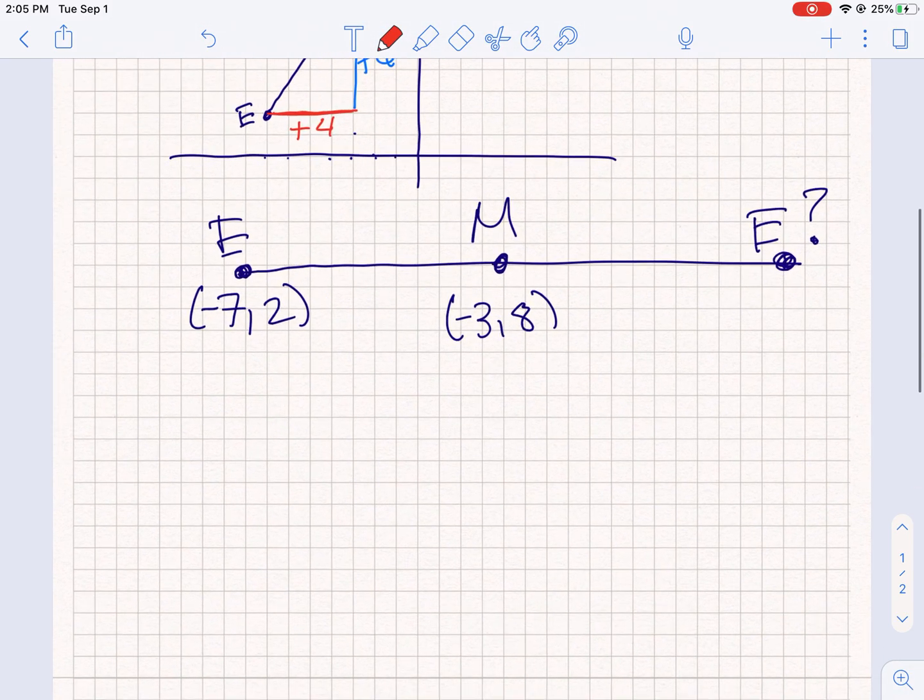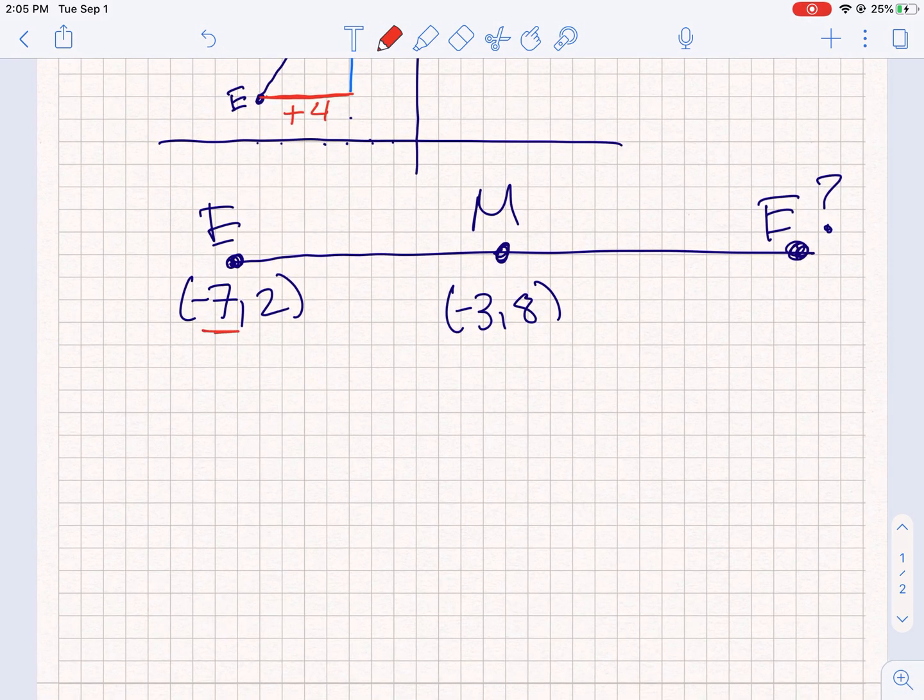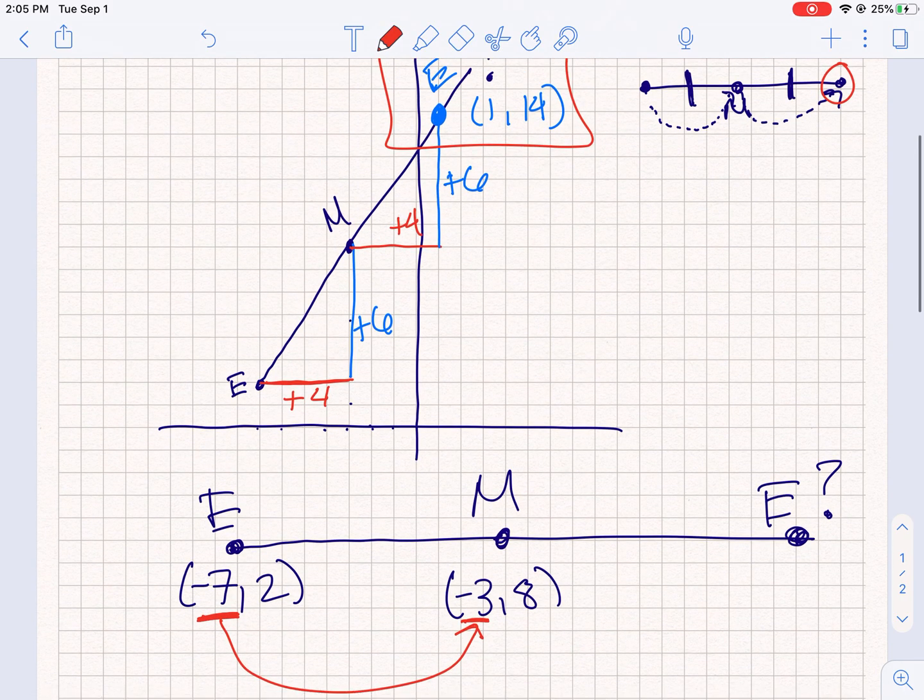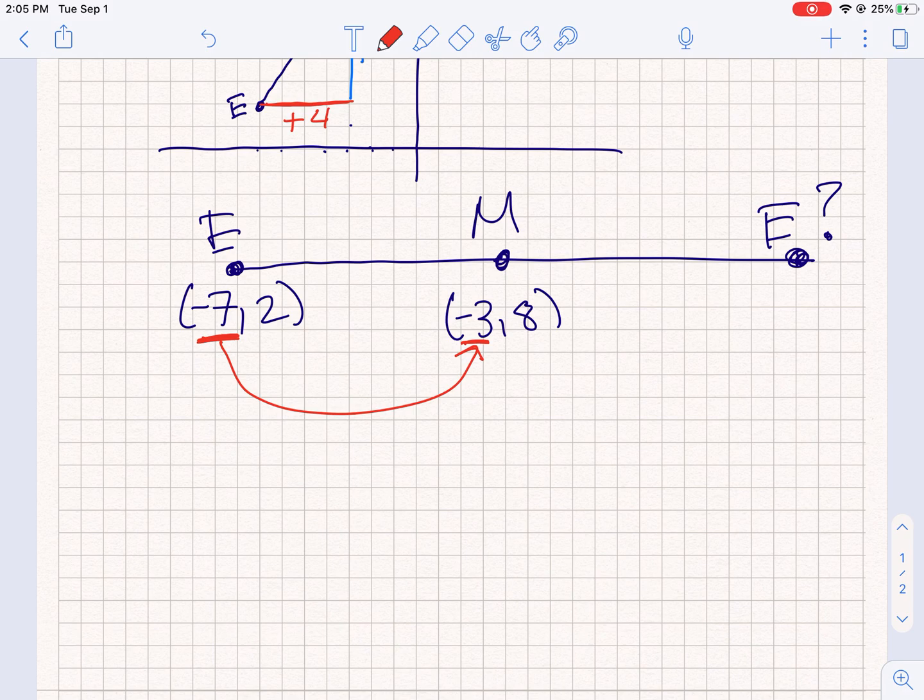So if I zoom in on this, I want to look at how do I get from -7 to -3. So we are trying to find how far apart they are. You can graph it and find out how far apart they are, or I could do -3 minus -7, which gives me positive 4. So that means I did -7 plus 4 to get to -3.